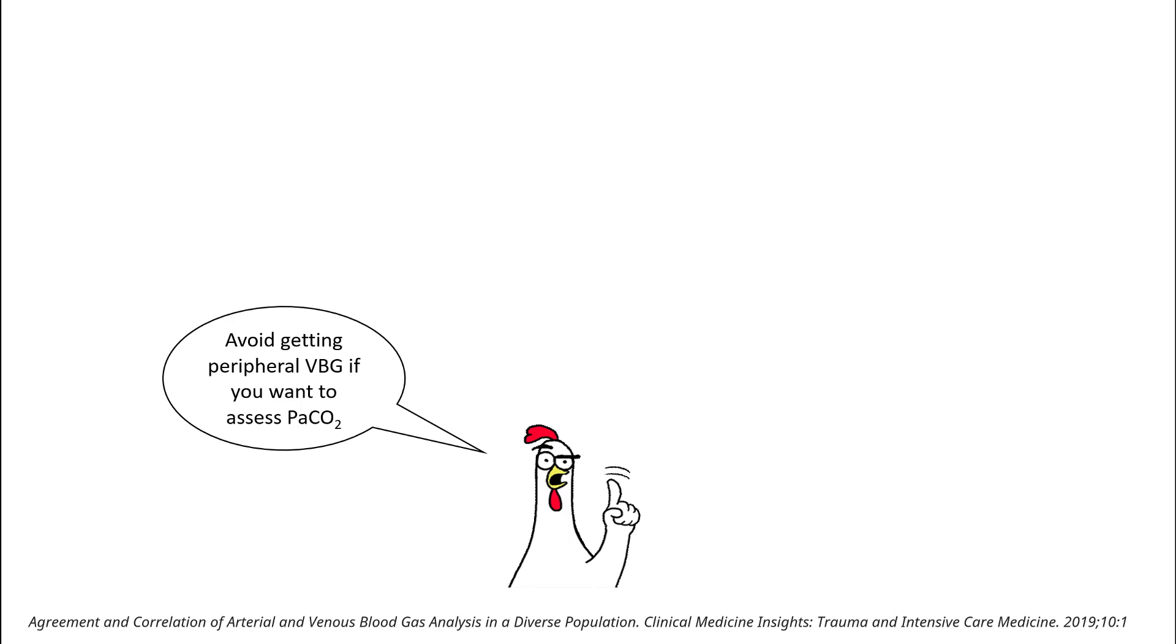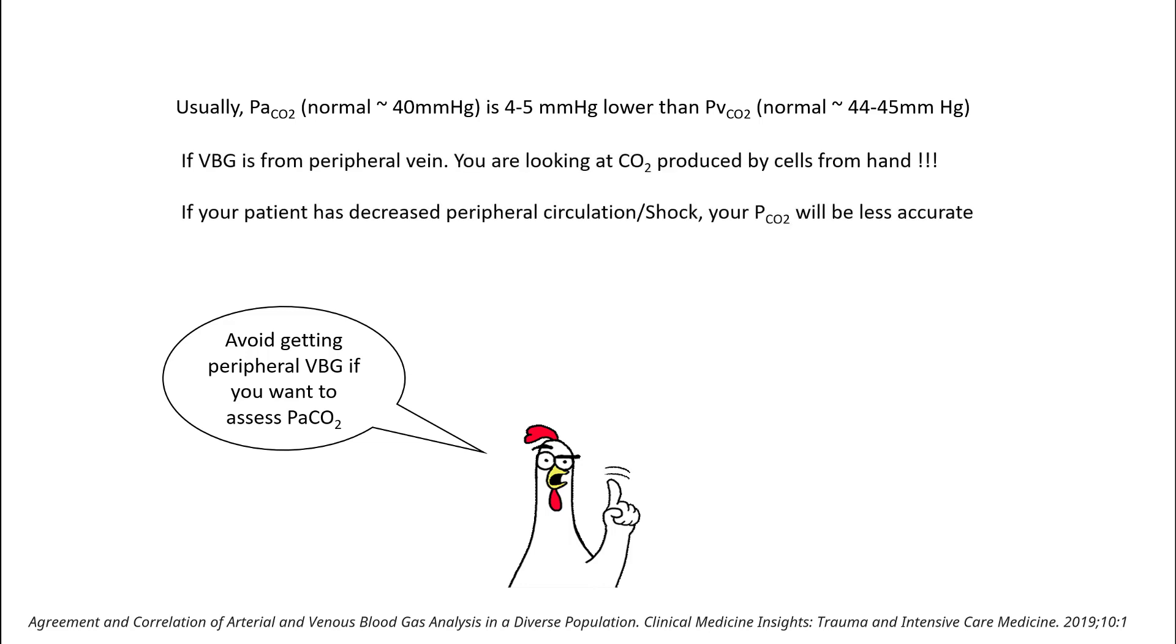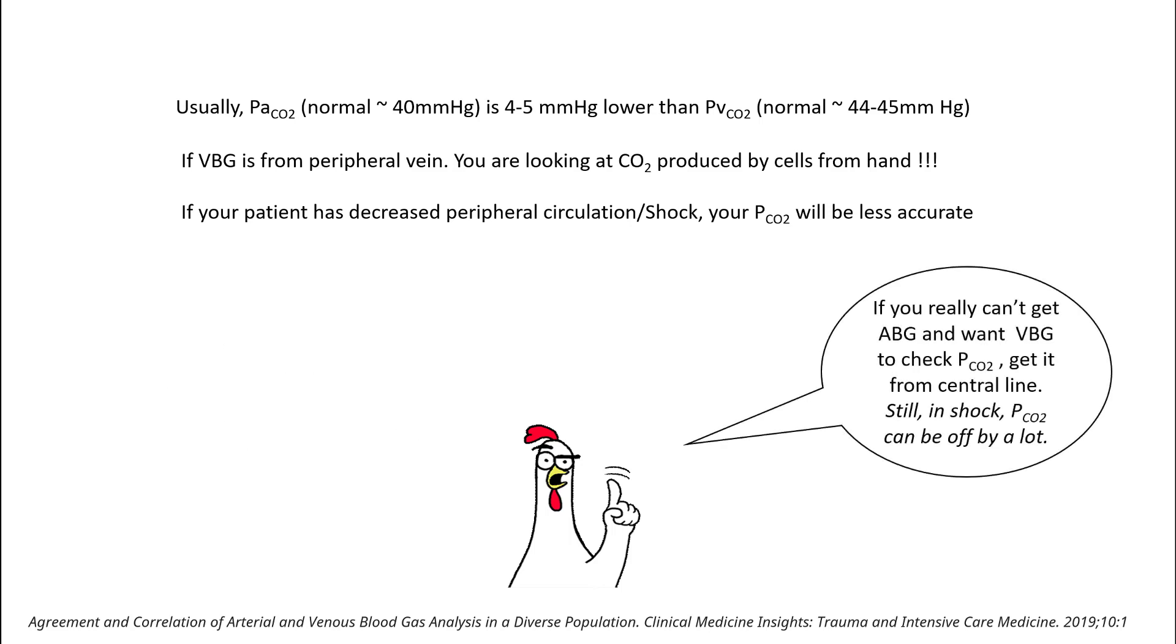If possible, avoid getting peripheral venous blood gas to evaluate your PaCO2. Usually, the venous PaCO2 is 4 to 5 millimeters of mercury higher than arterial PaCO2. So some extrapolation can be made. However, remember that VBG is from a peripheral vein, so you are looking at the CO2 produced by the cells from the hand. And if your patient has decreased peripheral circulation or is in a state of shock, your PaCO2 will be much less accurate, and the difference of 4 to 5 may not stand. If you really cannot get an ABG and want a VBG to check the PaCO2, try to see if you can get it from a central line. Those would be possibly more accurate. However, still in shock, the PaCO2 between the arterial and venous can differ by a lot.